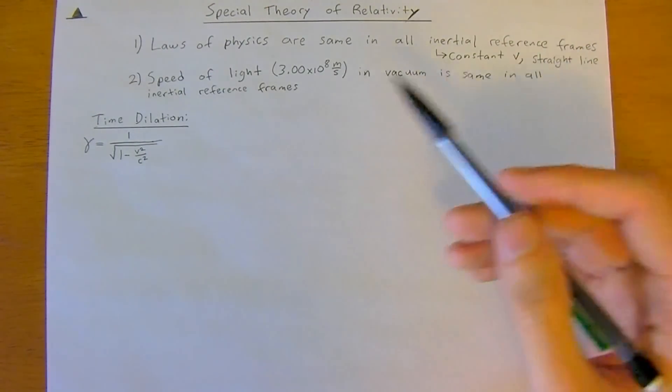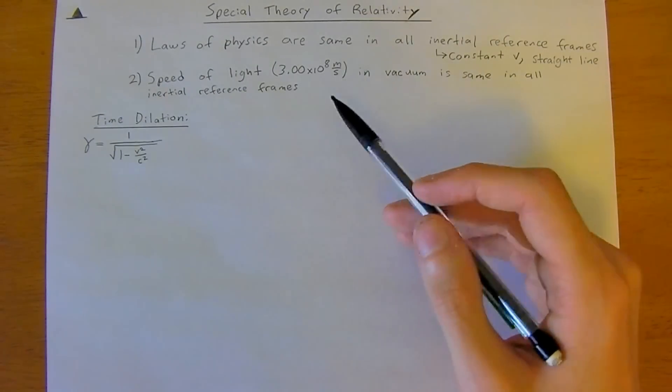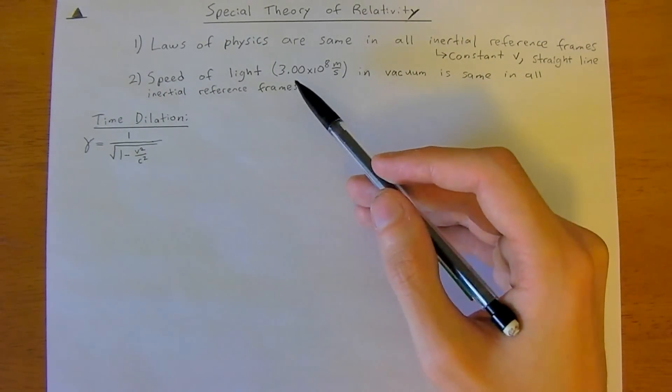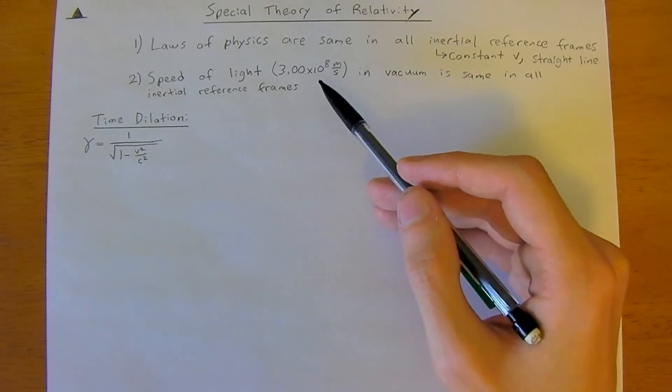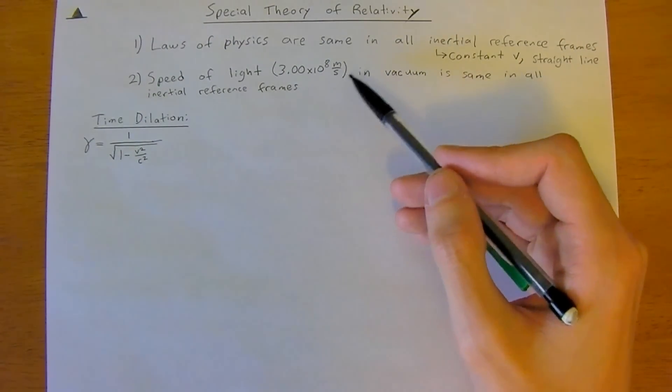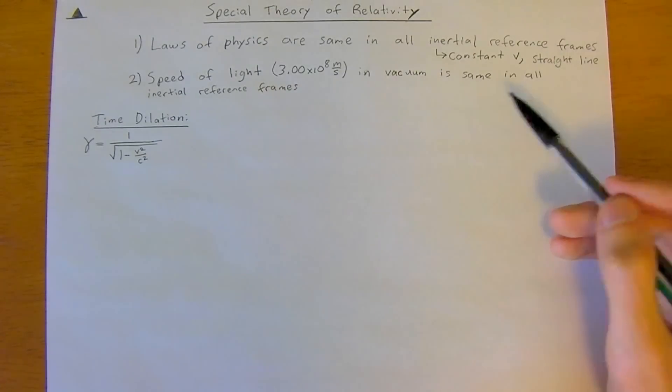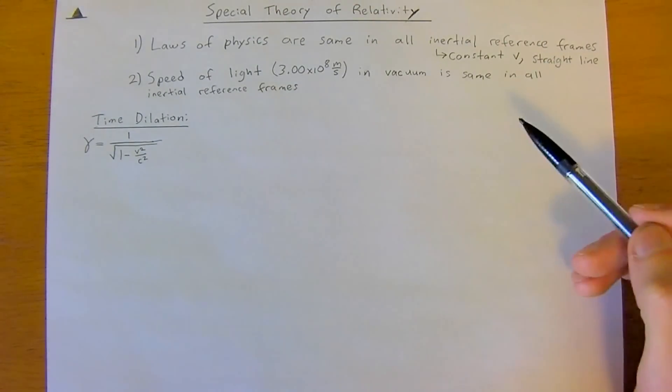And the second postulate is that the speed of light, which is a good approximation which we use all the time, is 3.00 times 10 to the 8 meters per second. And this is in a vacuum and it is the same in all inertial reference frames.